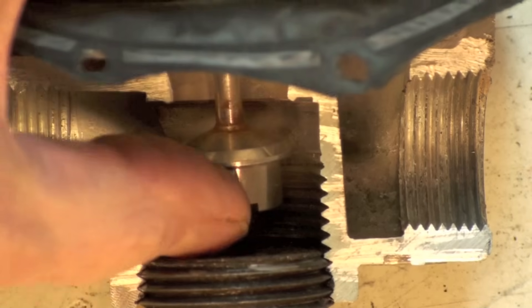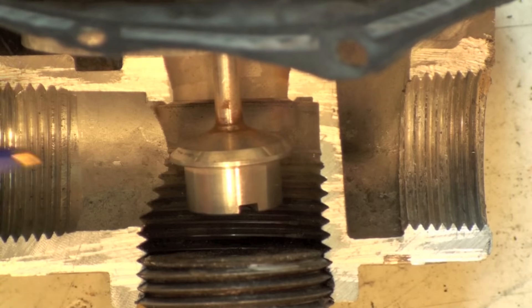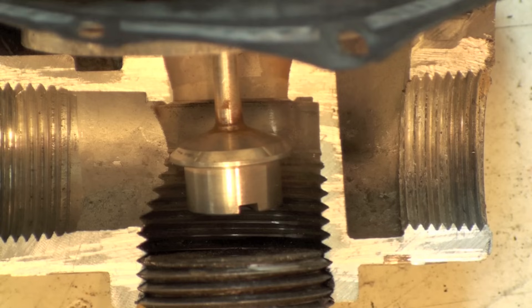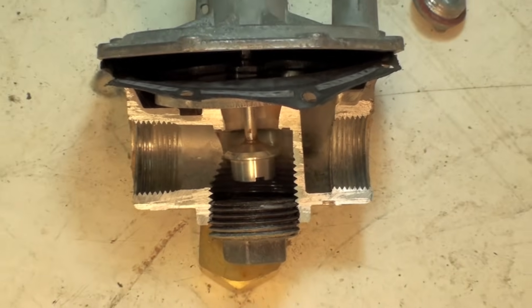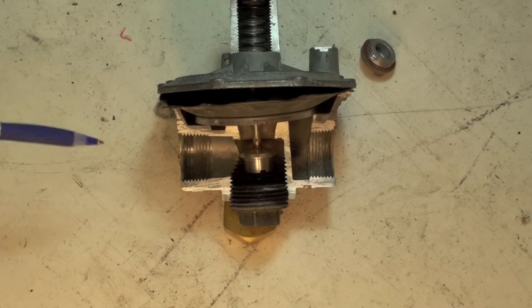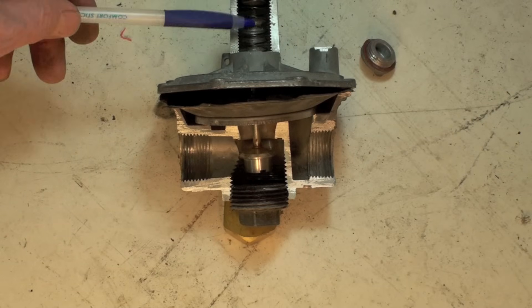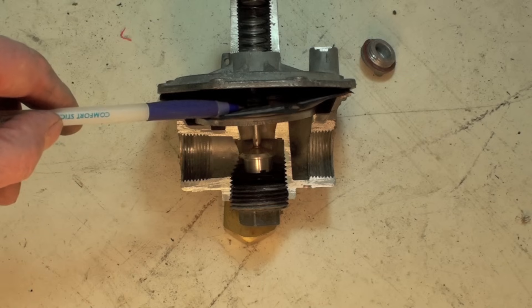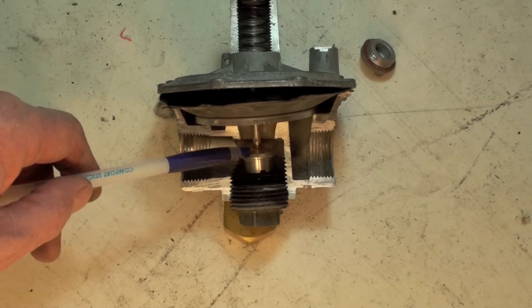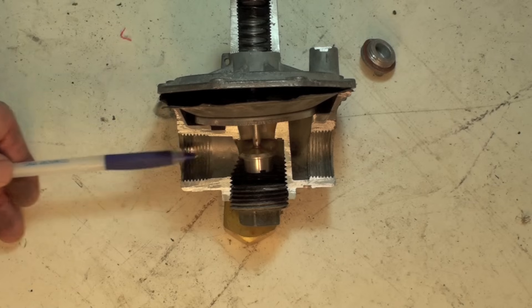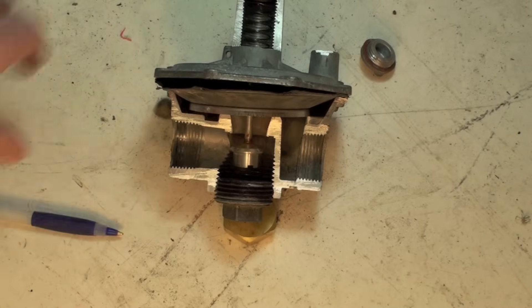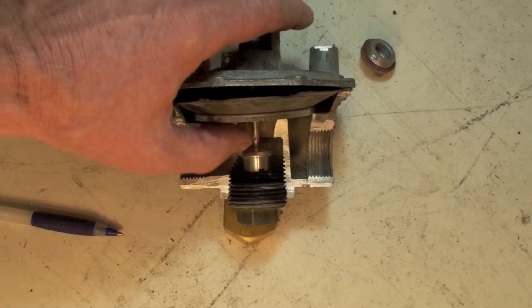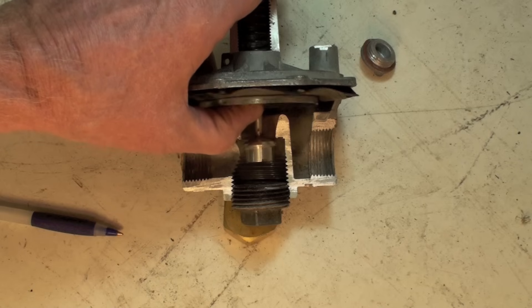So when my gas comes in here, the spring presses down on the diaphragm here which opens this valve. Once my water column pressure comes in here, it passes through this valve, pushes on the diaphragm, and tends to close the valve.